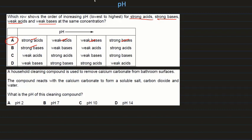A household cleaning compound is used to remove calcium carbonate from bathroom surfaces. Which compound reacts with calcium carbonate to form a soluble salt, carbon dioxide, and water? Carbonates react with acids. Acids have a pH less than 7, so the compound with pH 2 is the answer. These were all the questions related to acids, alkalis, bases, indicators, and pH. We will solve more questions in the next video.